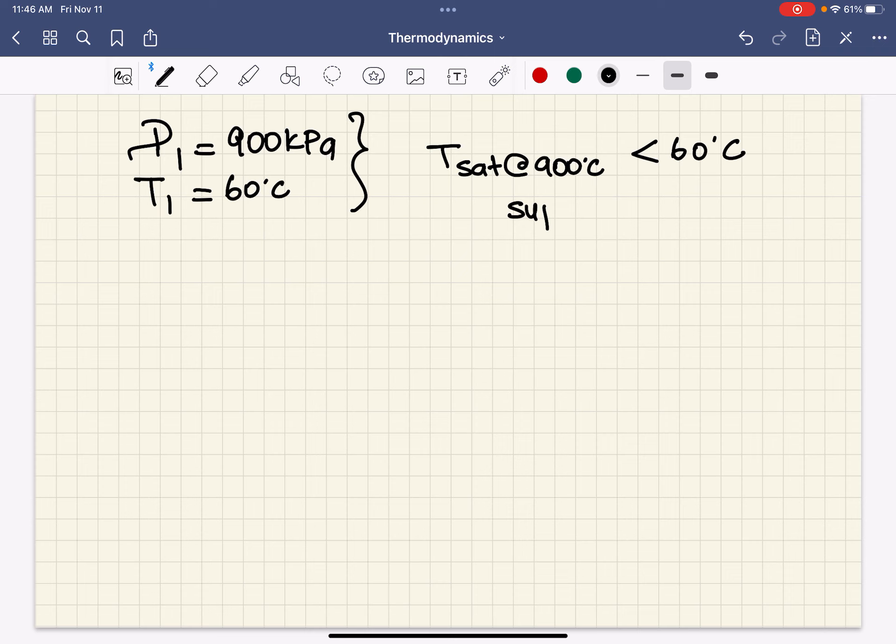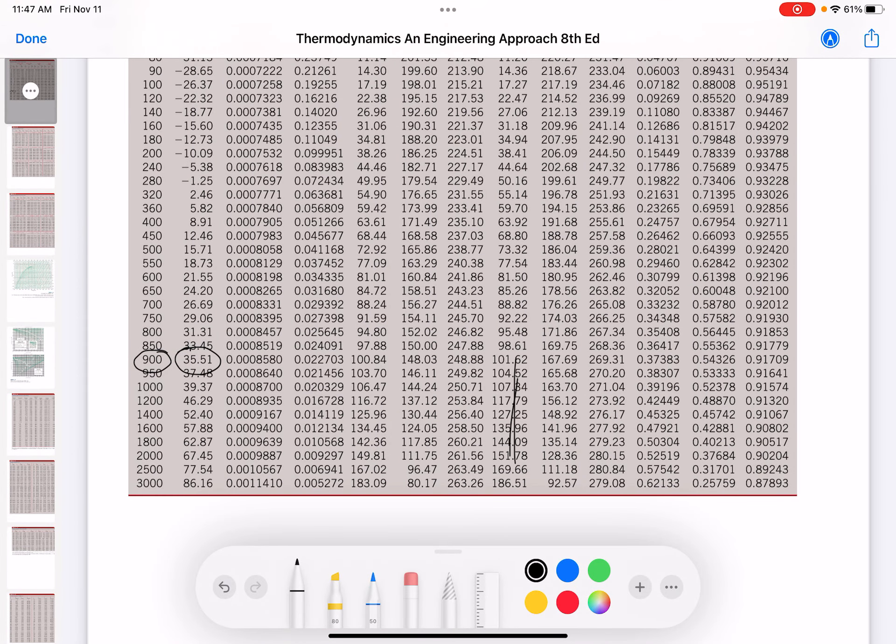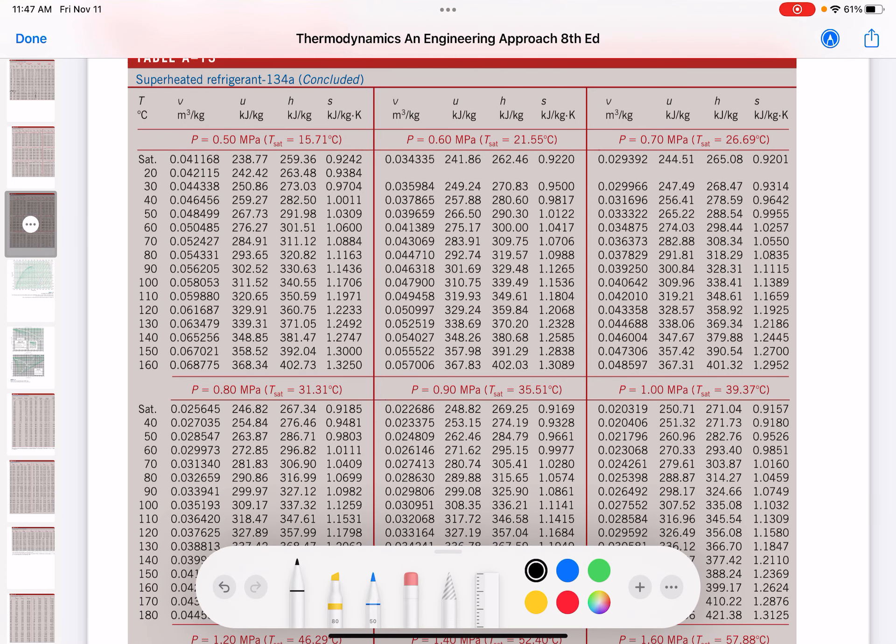So therefore, now the correct tables to look at are superheated tables. At 0.9 megapascal, which is 900 kilopascal, we located that. And of course, the temperature was 60. 60 at this column, we are looking at... The enthalpy is 295.15.